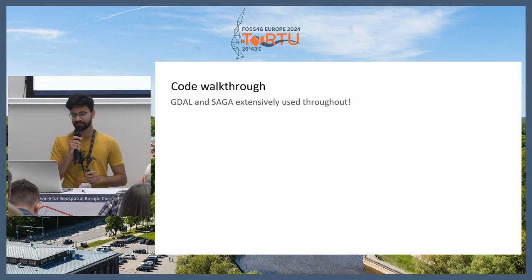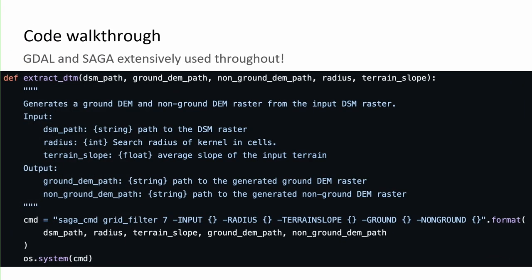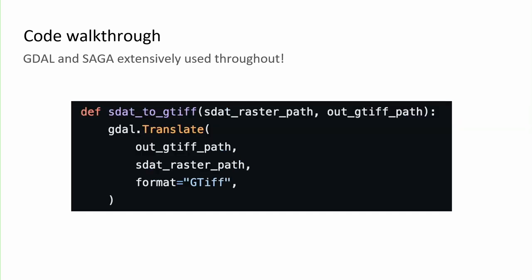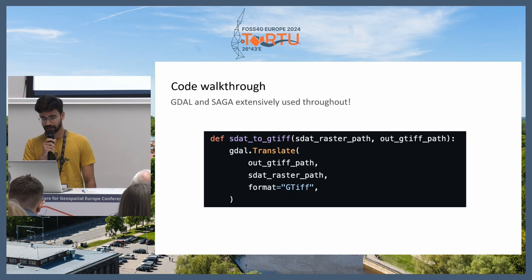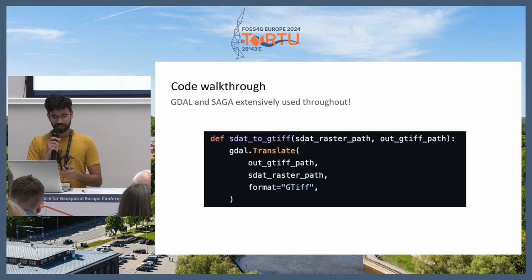The code extensively uses GDAL and SAGA throughout. This package is more of a wrapper around SAGA's functionality with a lot of post-processing. Here you can see SAGA's command-line function to actually generate the DTM. SAGA generates files in .sdat format — I tried to generate GeoTIFF directly but it didn't work, so I used gdal_translate to convert from .sdat to GeoTIFF.